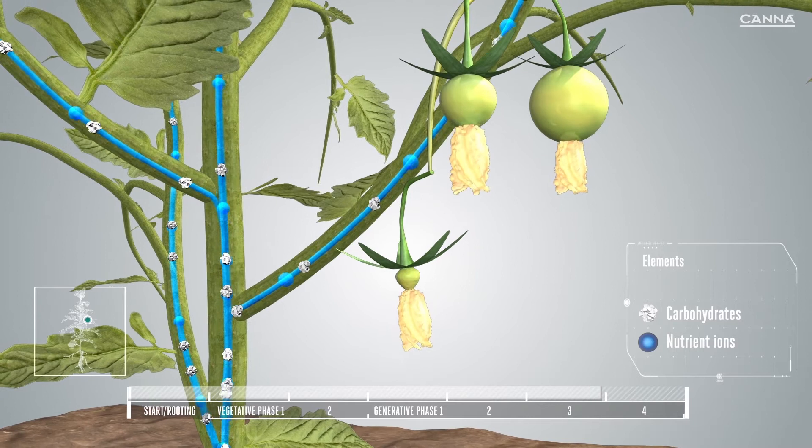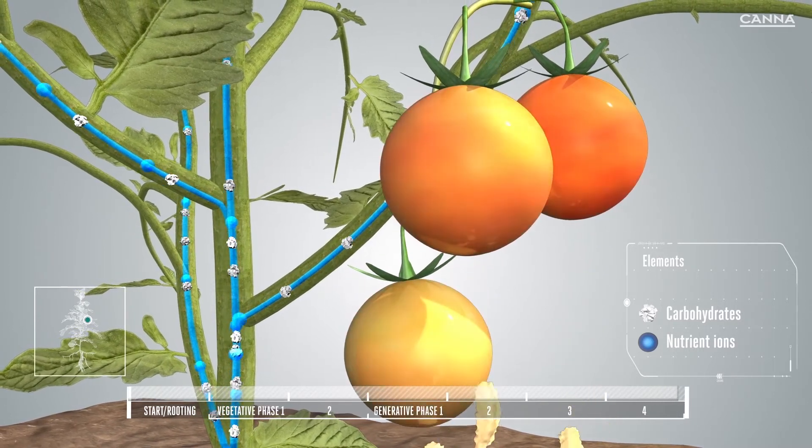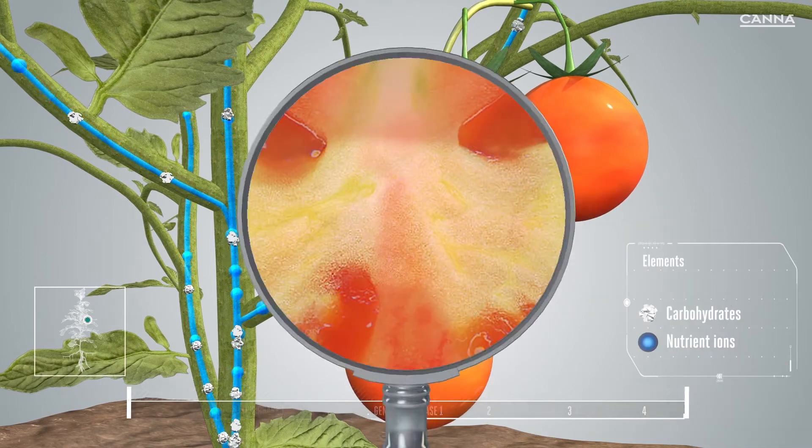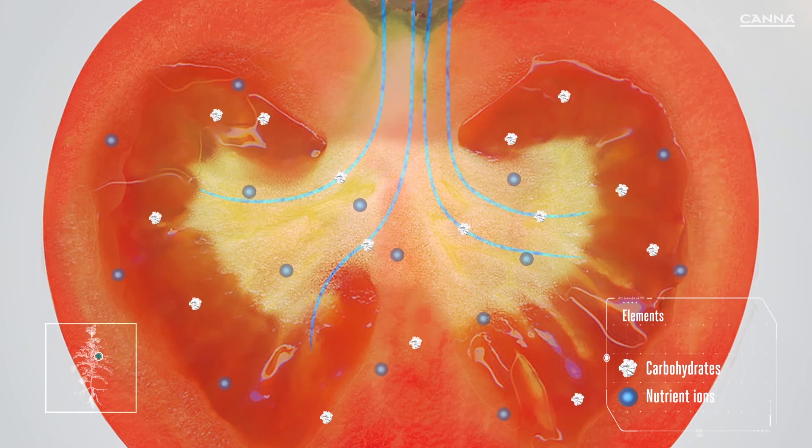As the flower changes into fruit, the components in Canna Boost and the sugars created by the extra photosynthesis make the fruit larger and improve its flavor. The fruit also absorbs nutrient ions from Canna nutrients and PK 13-14 feed, which means they grow faster and more vigorously.